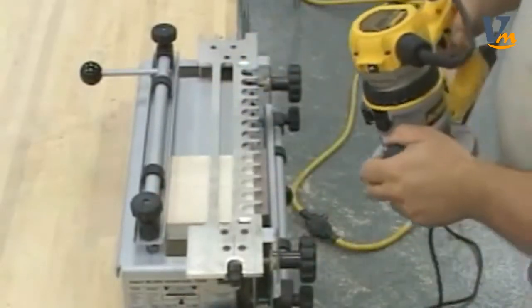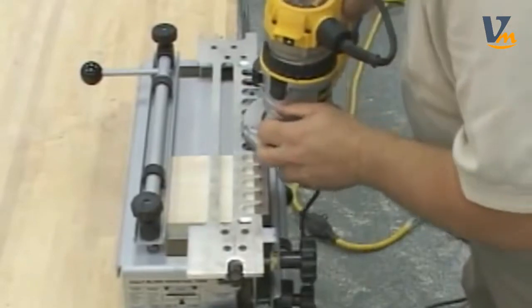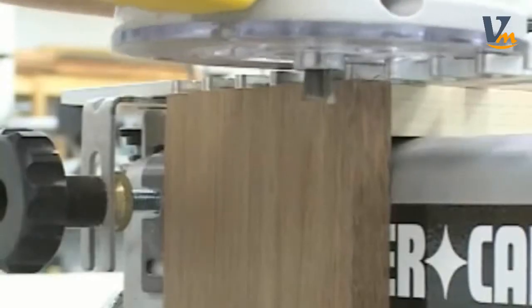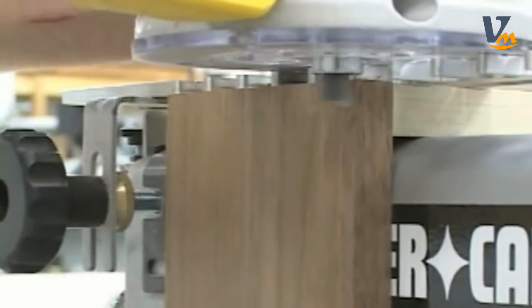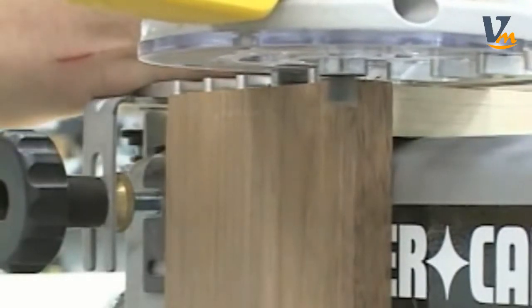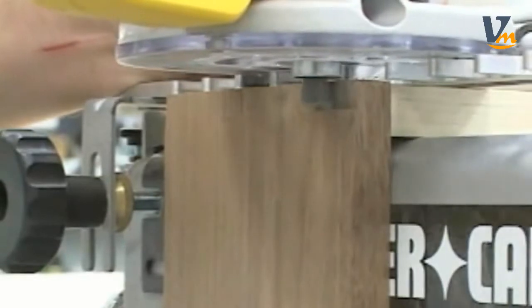Set the router base flat on the edge of the jig's template to the right of the workpiece. Turn the router on and move it across the face of the work until you reach the first finger of the template. This light climbing pass reduces splintering of the joint.